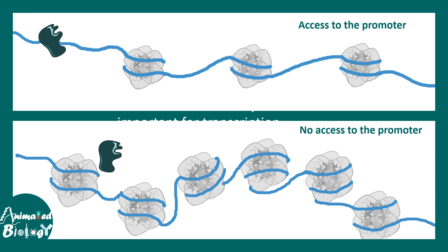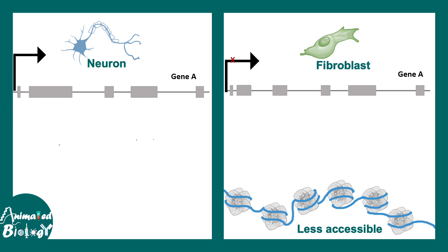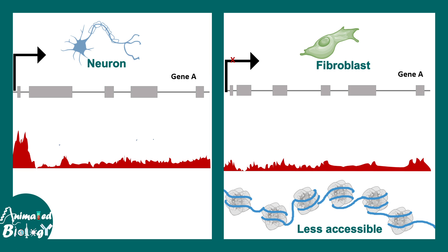Let's talk about what happens during accessibility changes. If you have accessibility in a promoter, the transcription factor can jump in, interact with polymerase, and start transcription. So chromatin accessibility is the precursor for transcription to occur. Now, imagine two different cell types — in those two cell types there could be different organization of chromatin, and we can get an idea of that using ATAC-seq.